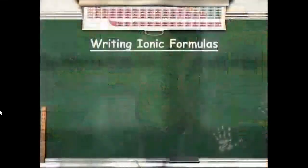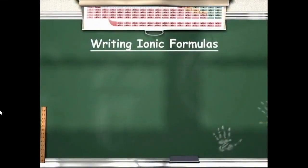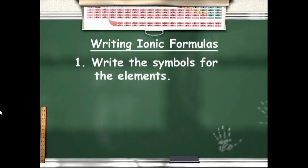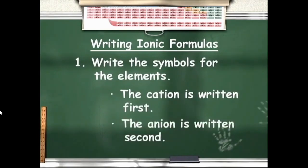Now let's put all this information together and find the system scientists use when writing the formula of ionic compounds. The first step is to write the symbols of the elements in the compound. The symbol for the cation — usually a metal — is written first, followed by the symbol for the anion — usually a non-metal.